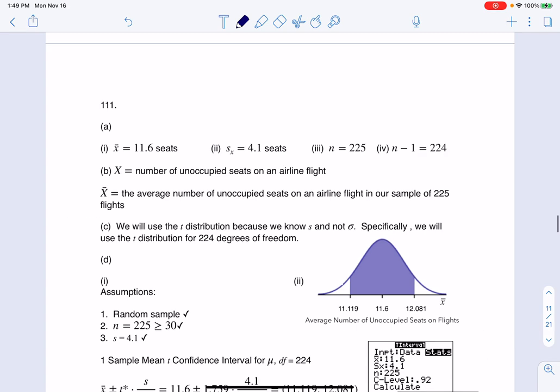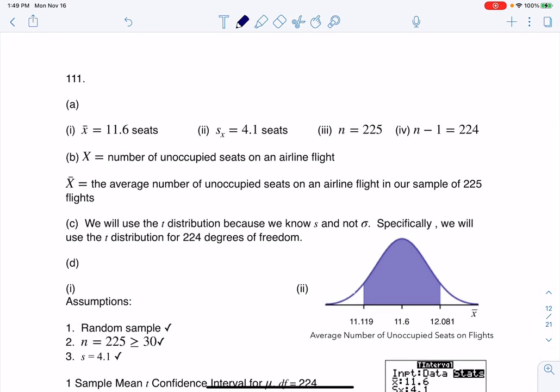So those are the first things you see me talking about. There's my mean, there's my standard deviation. I had 225 flights, and that would technically make n minus 1 equal to 224, or really what we call in stats, those are the degrees of freedom.